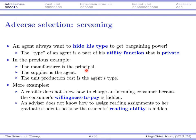In the previous example, the manufacturer is the principal, the supplier is the agent, and the unit production cost is the agent's type. To give more examples: a seller who does not know how to charge each consumer faces a screening problem because the consumer's willingness to pay is hidden. The seller knows the best strategy is to charge each consumer exactly their willingness to pay, but that is impossible because the type — willingness to pay — is hidden.